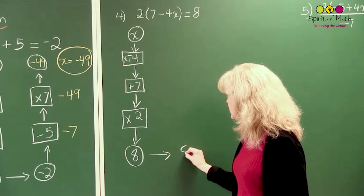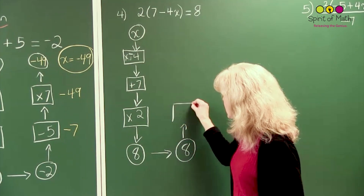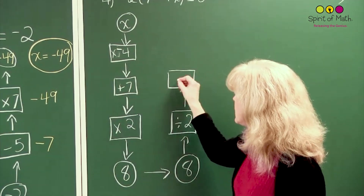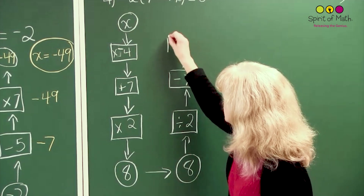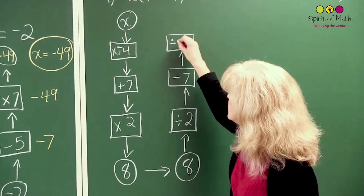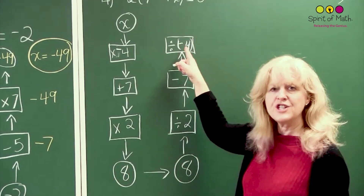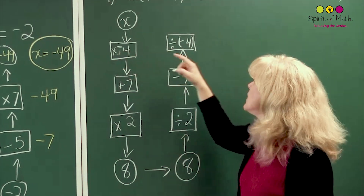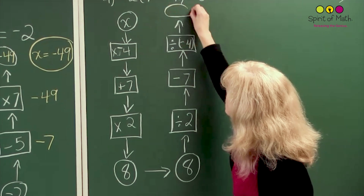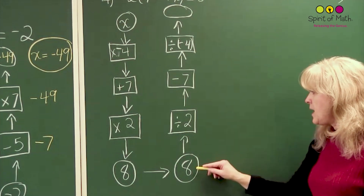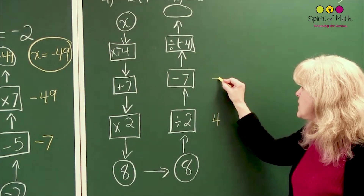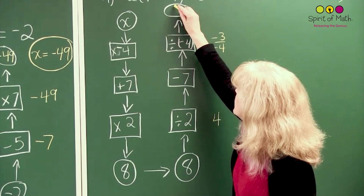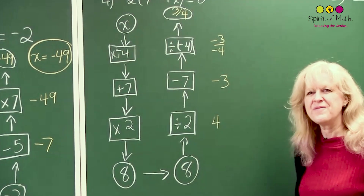Now let's go backwards. You have your 8. The first square said multiply by 2, so this time you divide by 2. The next square said add 7, so you subtract 7 — the opposite operation. The next square said multiply by negative 4, so you divide by negative 4. Note that the negative does not change because it's part of defining the number; the operation changes from multiply to divide. So: 8 divided by 2 is 4. 4 minus 7 is negative 3. Negative 3 divided by negative 4 — two negatives — gives you 3 quarters as your final answer.